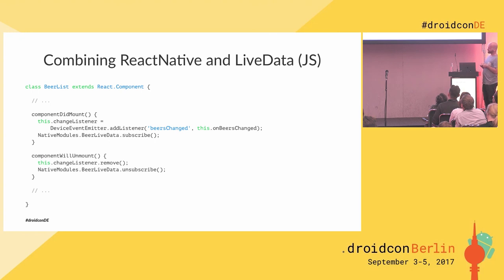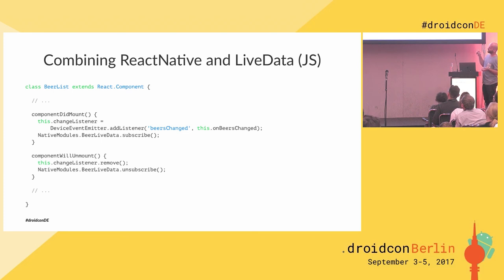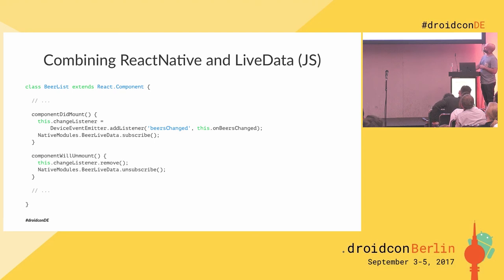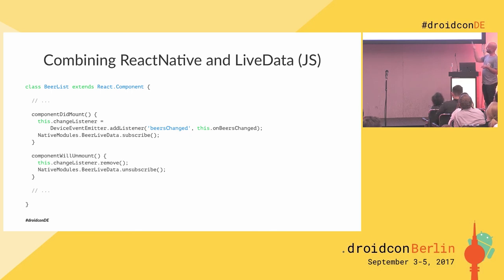Here's the corresponding unsubscribe method — this has to happen on the main thread, otherwise you'll get an exception. Any time the LiveData changes, we pass that data back to the JavaScript side using WritableMap (arguments create map is part of React Native — it's kind of like creating a Bundle). On the JavaScript side, I didn't go through the React Native component lifecycle, but you can tell from componentDidMount and componentWillUnmount that it has a lifecycle. When the component mounts, we register a change listener to that 'beers changed' event. When it unmounts, we remove that listener and unsubscribe from our LiveData observing on the other side.